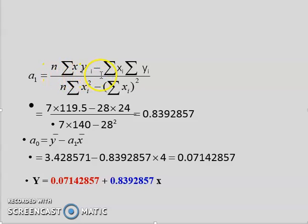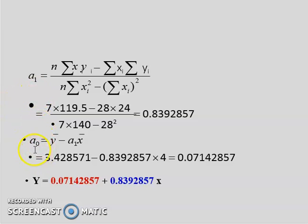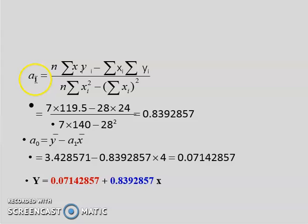The formula for a1 is: n*(summation of xi*yi) minus (summation of xi)*(summation of yi), divided by n*(summation of xi²) minus (summation of xi)². All these values are calculated from the previous table. Then a0 is calculated as ȳ − a1*x̄. Substituting the values, we get the final equation y = a0 + a1*x, where a0 and a1 are the fitted coefficients.